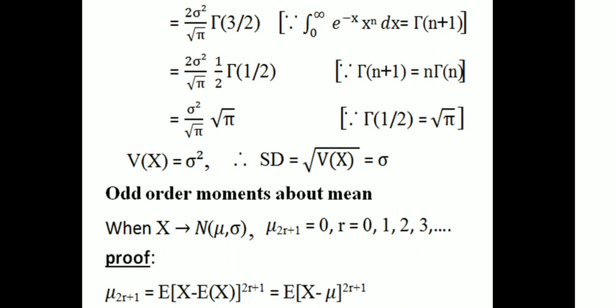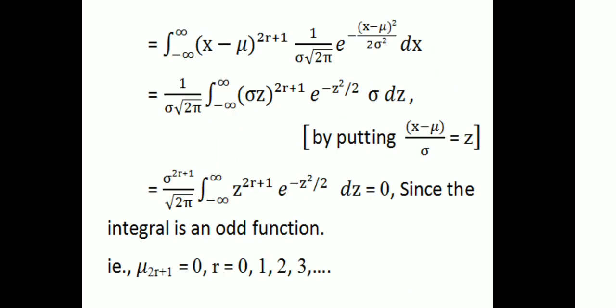That is, μ₂ᵣ₊₁ is equal to the expectation of (X minus E[X]) all raised to the power 2r+1. Since X follows normal distribution, E[X] equals μ, so this becomes the expectation of (X minus μ) all raised to the power 2r+1.